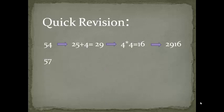Now for 57, 25 plus 7 comes to be 32, and 7 into 7 comes to be 49. So the final answer will be 3249. That was quick.